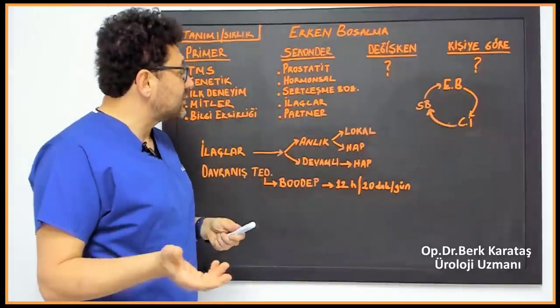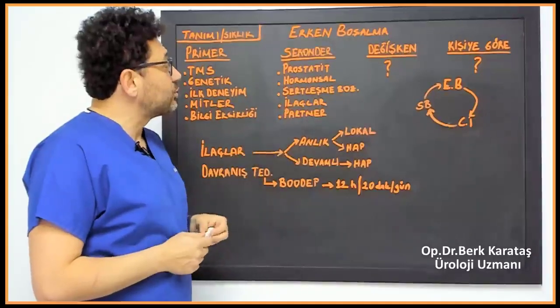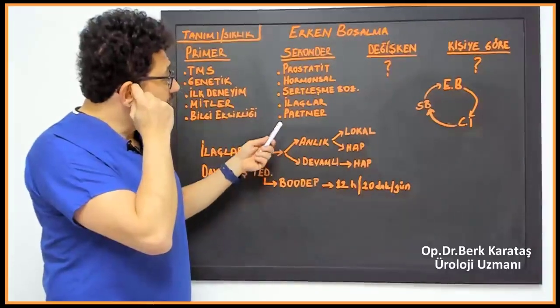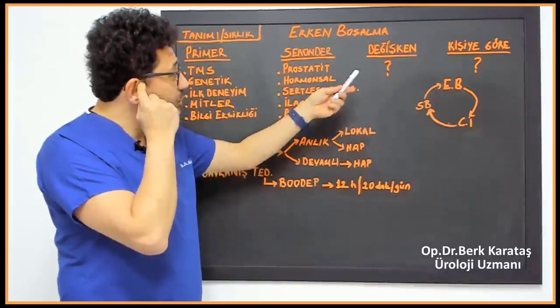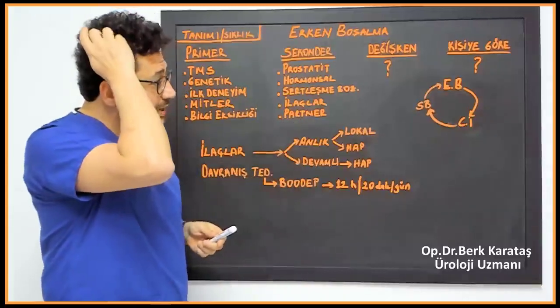Some medications can cause premature ejaculation. Of course, the partner issue is important. Here's what we call a partner. This is the difference between variable-type premature ejaculation.